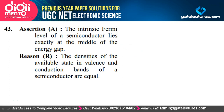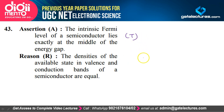Question 43: The intrinsic Fermi level of a semiconductor lies exactly at the middle of the energy band gap — true. This is because the density of available states in the valence and conduction bands are equal for an intrinsic semiconductor. Option A is absolutely correct.